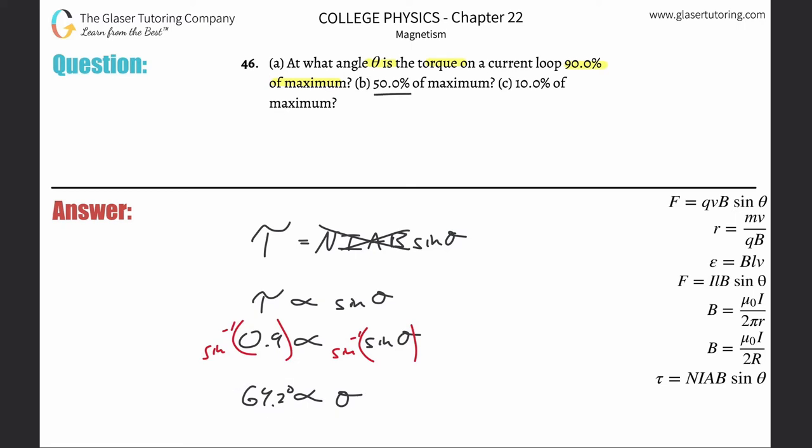So now what would you do when it's 50? Well, guess what you're going to plug in here this time? You're going to plug in now 0.5. So when you plug in inverse sine of 0.5, the angle then becomes 30 degrees.